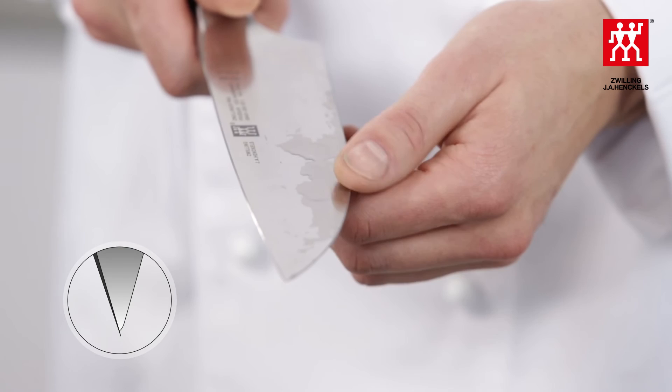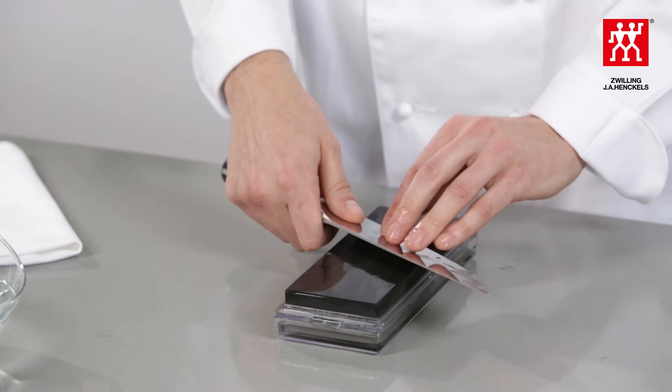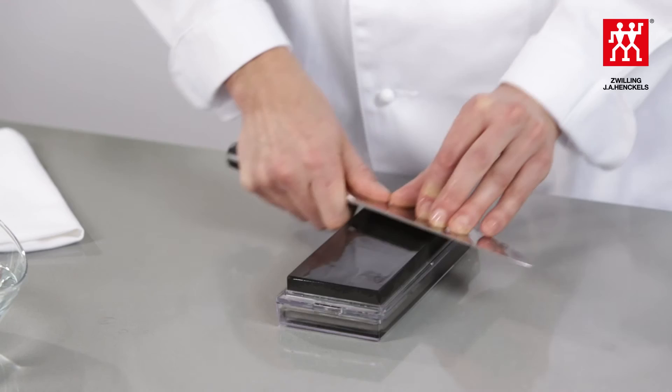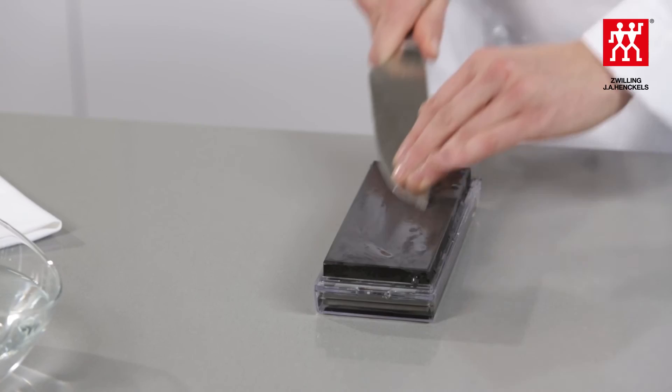Do this with care, as there is a risk that you could injure yourself. If you cannot feel the burr along the entire length, resharpen the blade on the stone at that point. Make sure that the stone is still sufficiently moistened. Stop sharpening your knife when you can feel a continuous burr along the entire length of the blade.